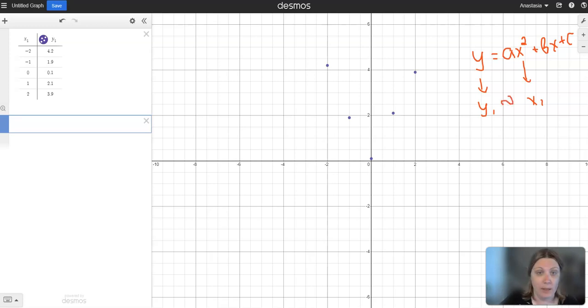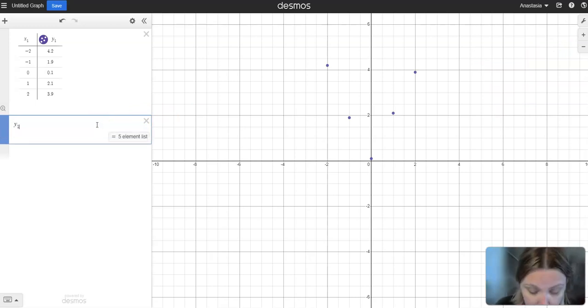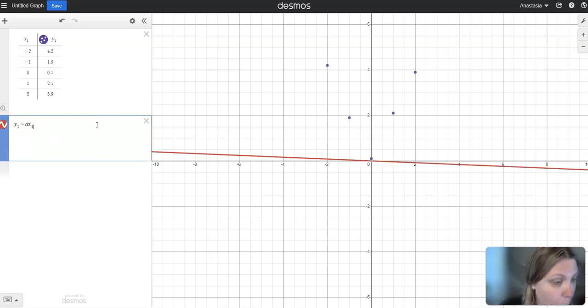Instead of all the X's we're going to put X1, and instead of the equal sign we're going to put this symbol. So let me show you how I am going to type it. So Y1, and this is you go Y underscore 1, and then you put the little symbol.